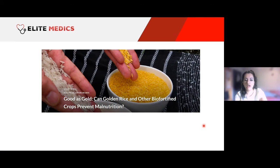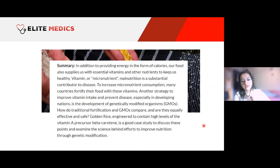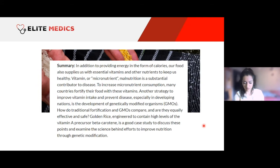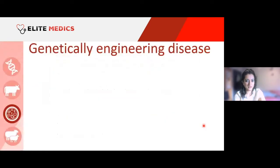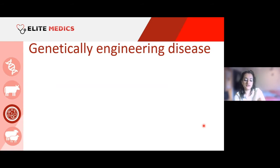An article about golden rice raises the question of whether biofortified crops can prevent malnutrition. Malnutrition is one of the key contributors to disease, and the idea is that modern science can modify food to help a malnourished population address deficiencies. This leads into the concept of using genetic engineering to address disease.